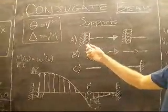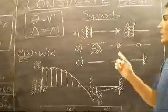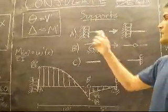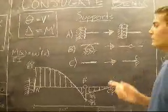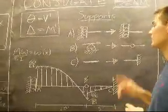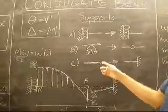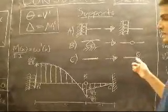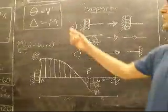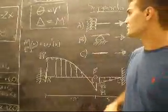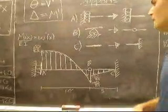The roller at the end stays as a roller. The roller in the middle changes to a pin or hinge, and the free end support changes to a fixed end support. This accounts for the assumptions we are making.